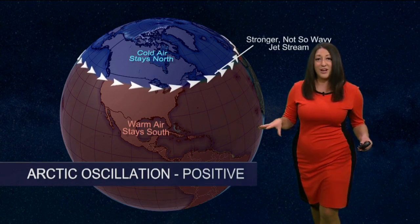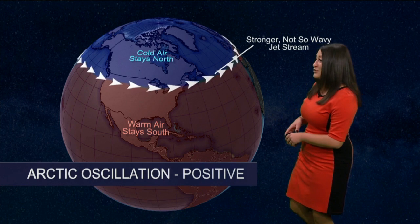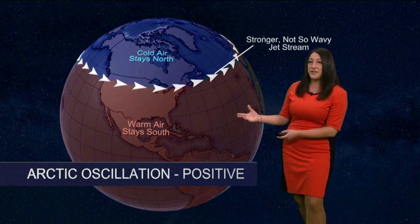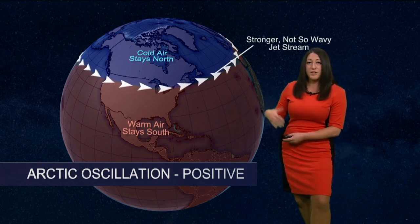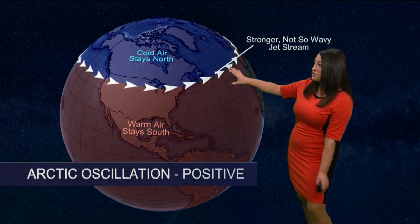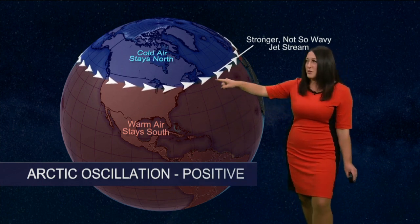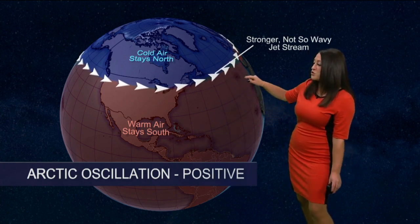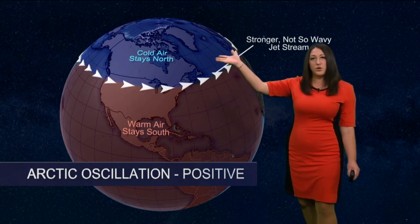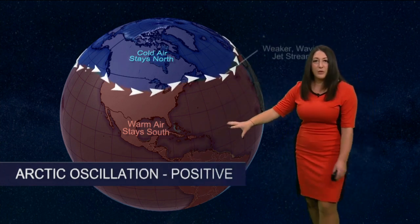This mainly affects the mid-level latitudes. There are two phases: positive and negative. When it's in a positive phase, the jet stream is much stronger, so it's not so wavy — it's got more of a straight line to it, which keeps the colder air up to the north and the warmer air down to the south.